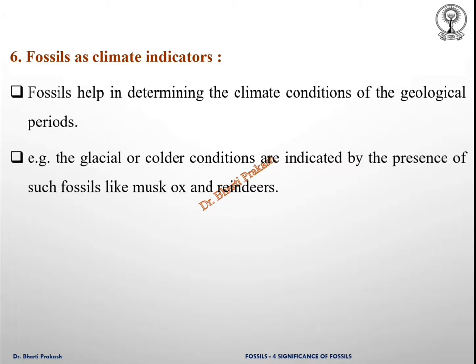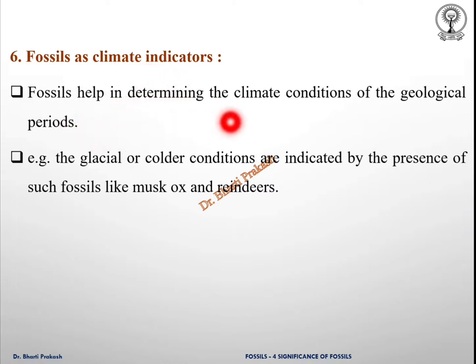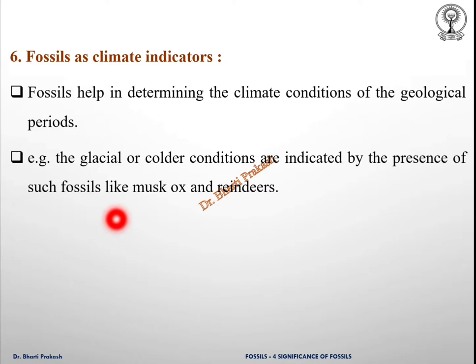The sixth significance is fossils as climate indicators. Fossils help in determining the climate conditions of a geological period. For example, glacial or colder conditions are indicated by the presence of fossils like musk oxen and reindeer.